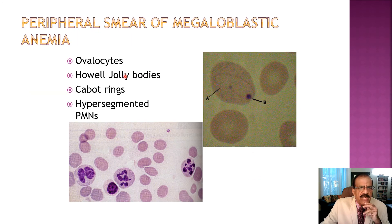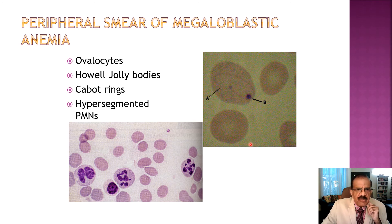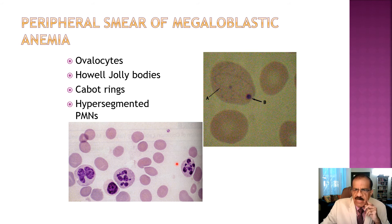Looking at peripheral smear pictures of megaloblastic anemia: you may have ovalocytes — this is the classical ovalocyte, big and oval-shaped. Howell-Jolly bodies are small nodules present in some RBCs. Cabot rings are another sign of megaloblastic anemia. Then hypersegmented polymorphonuclear cells — look at this one: one, two, three, four, five, six, seven, eight, nine lobes — nine lobes. These hypersegmented polymorphonuclear cells would suggest the diagnosis of vitamin B12 or folic acid deficiency.